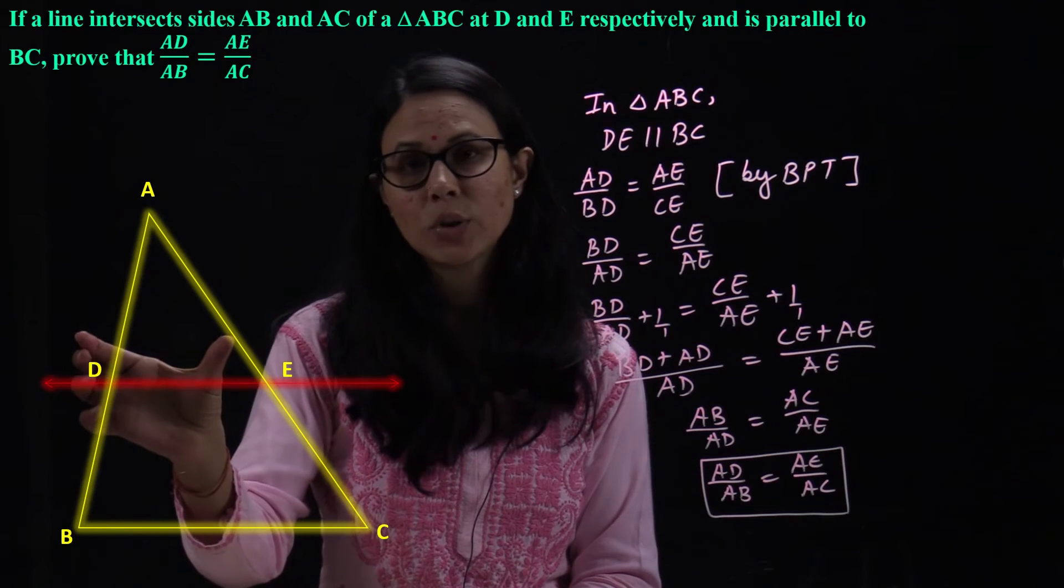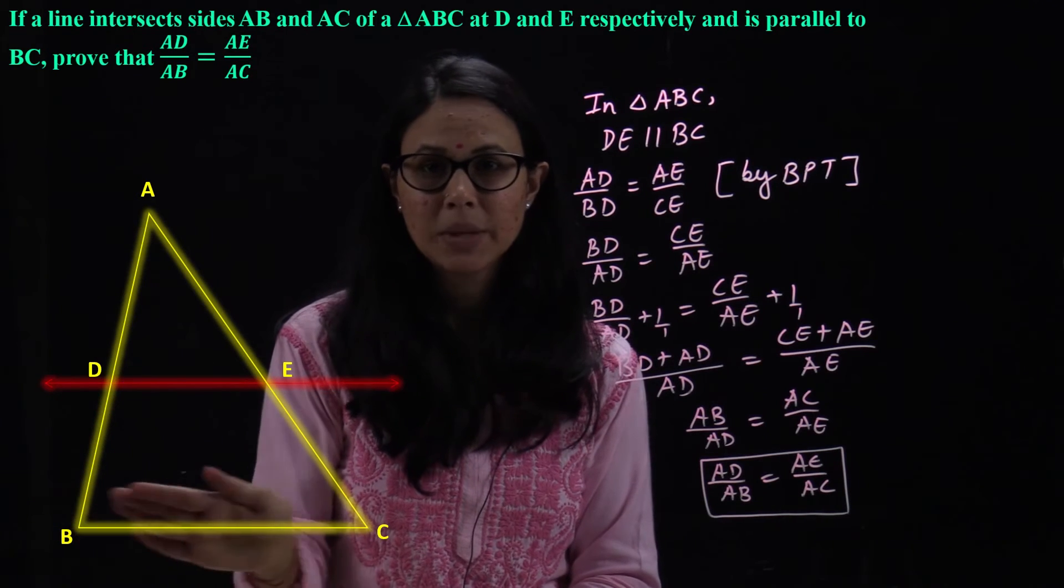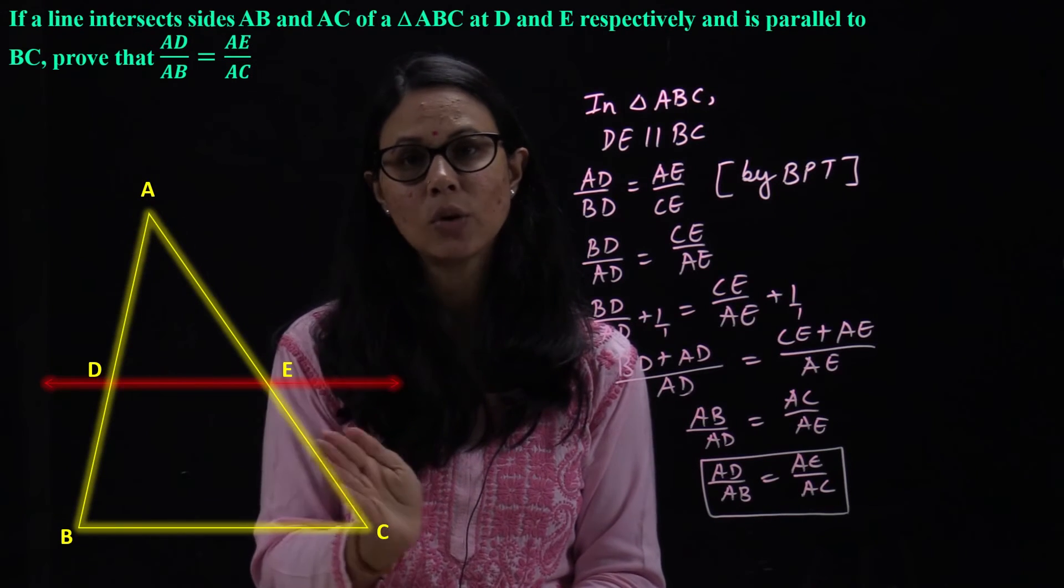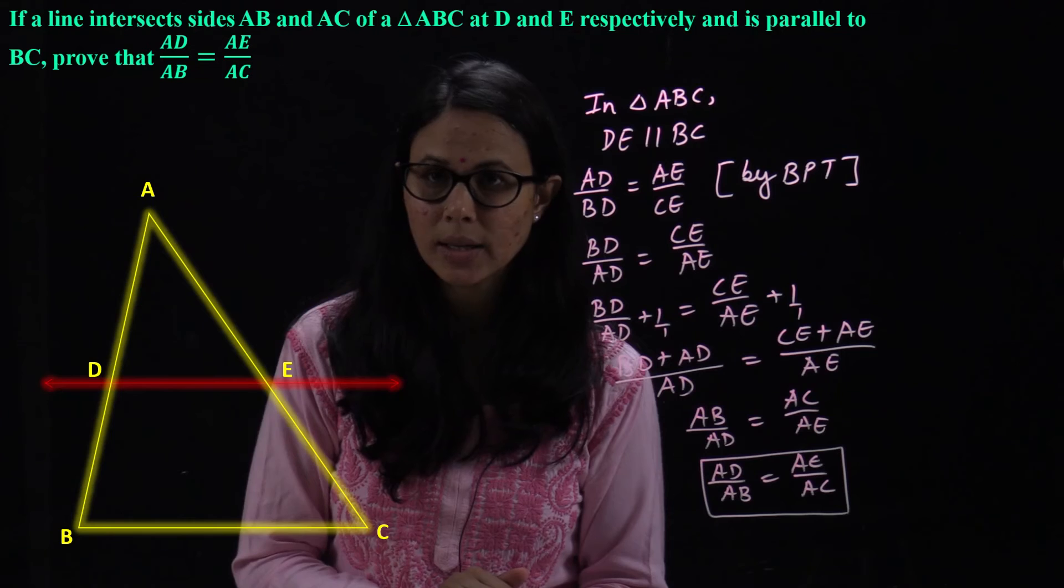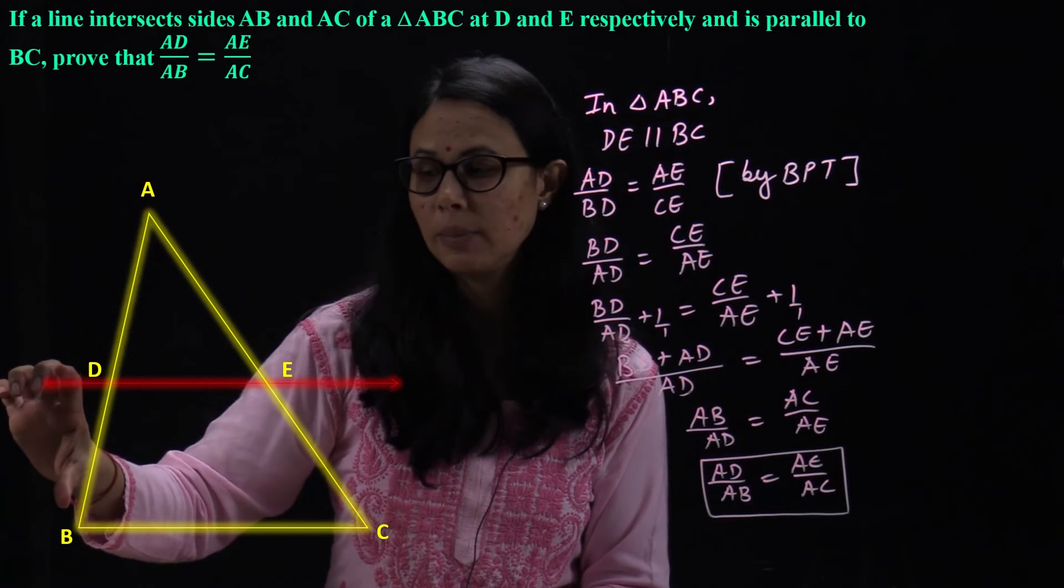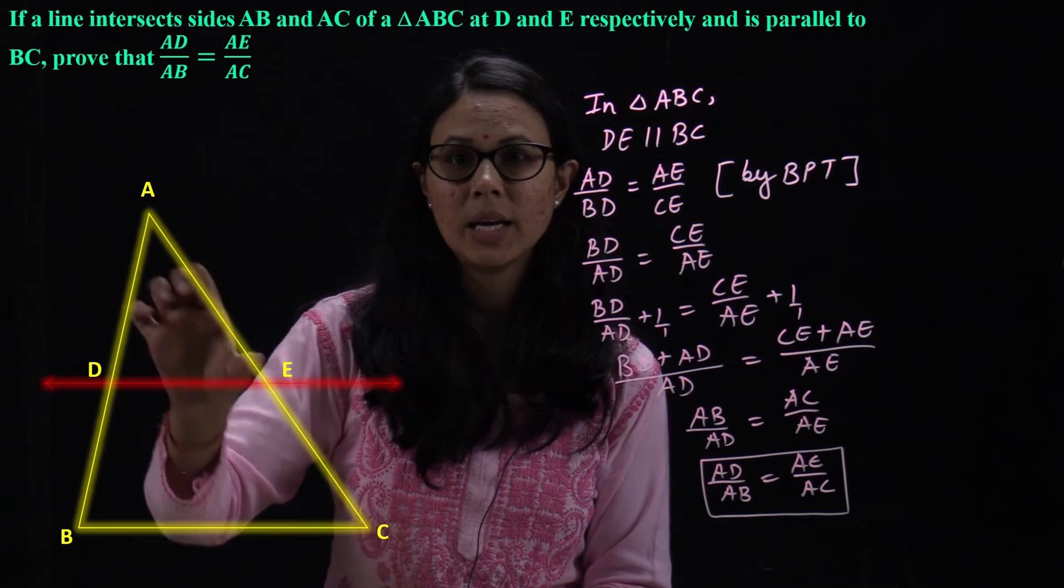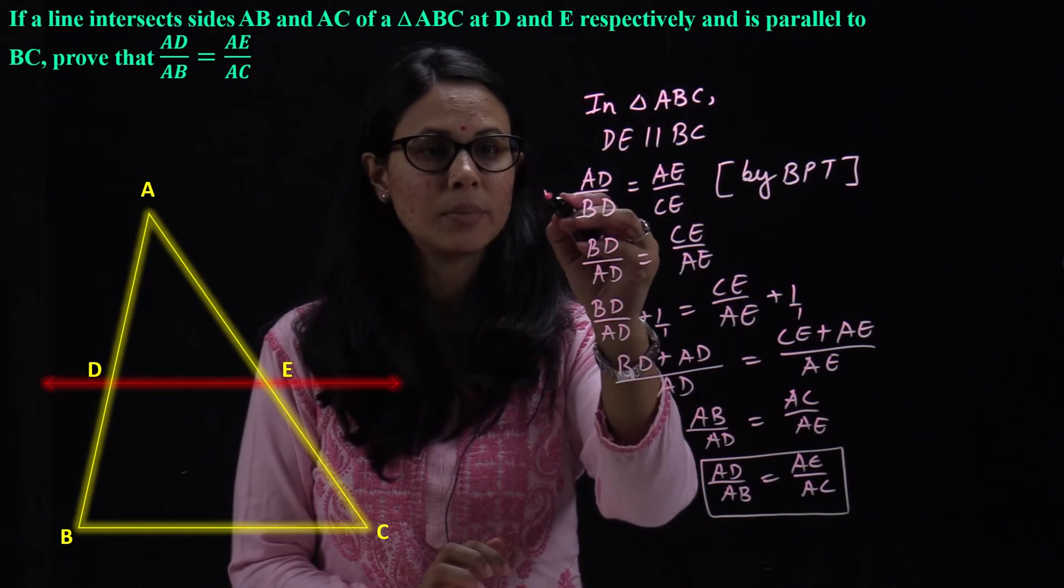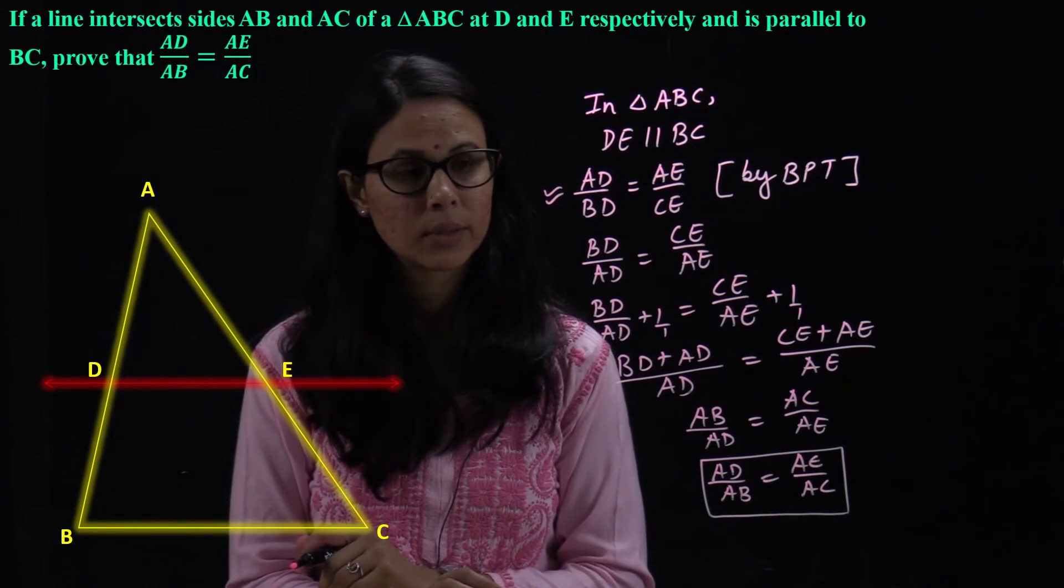Right? Now, here DE is parallel to BC. It means, DE divides the other two sides AB and AC in equal ratio. That is, AD upon BD is equal to AE upon CE. Right? This is the condition because of BPT. Correct?